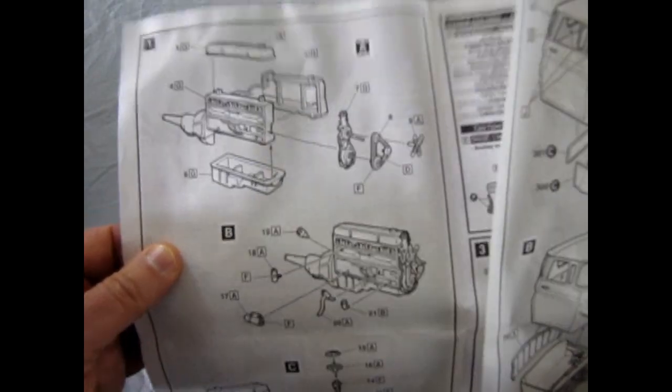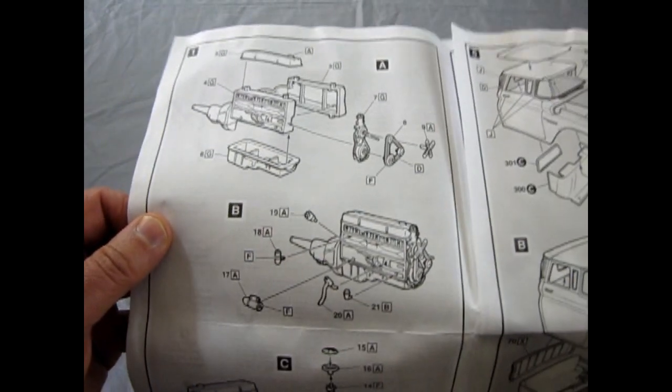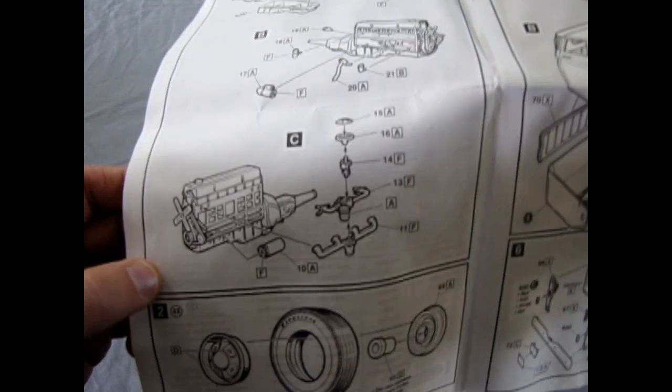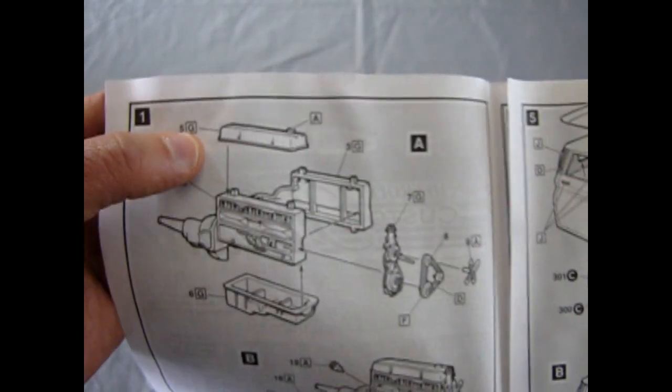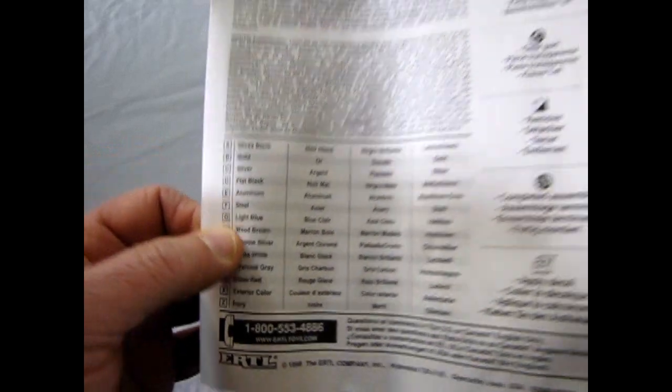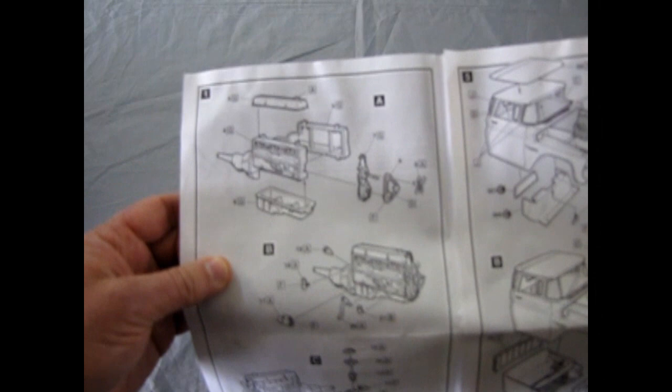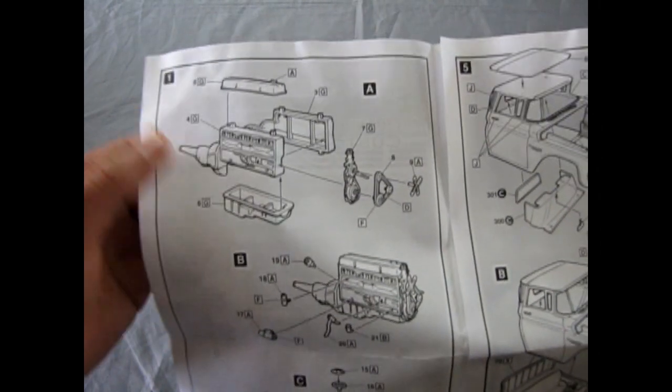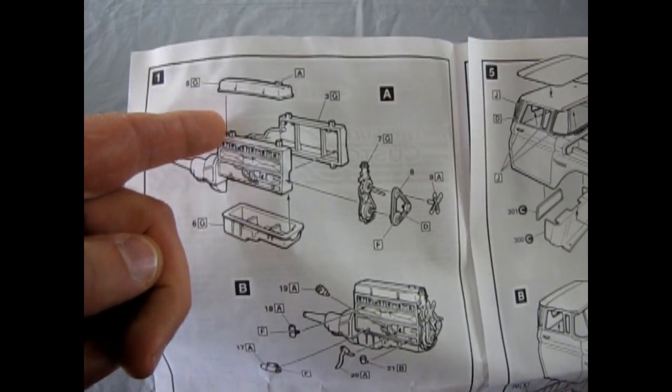They start with the Chevy Straight 6, very good, very reliable engine back in the day. They give you three panels of the engine going together. That should be your Chevy engine orange. Actually, they call for light blue. So they were using light blue on the Chevy engines, the Straight 6 anyway, for this year, for the trucks. You get a left and right hand side engine block, an oil pan, and valve cover at the top.